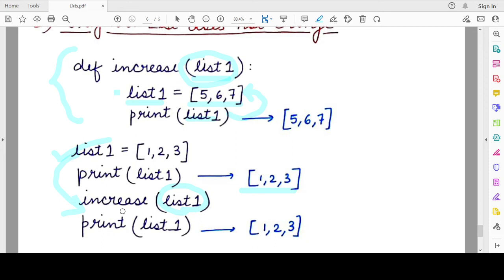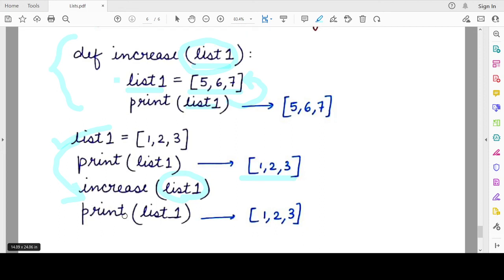Therefore, when you print after the function, when you print list1, the original value is retained because this local list will terminate as soon as the function ends. Outside this function, only this particular list is existing.